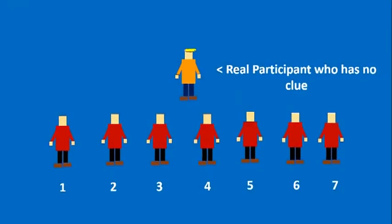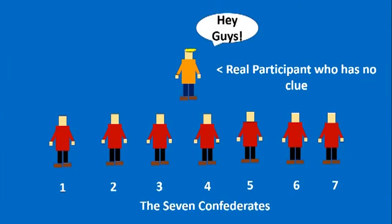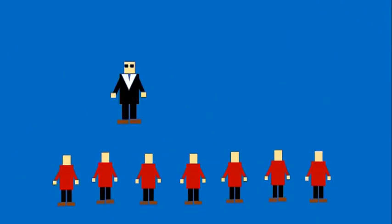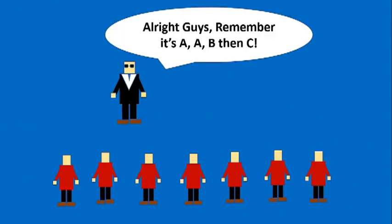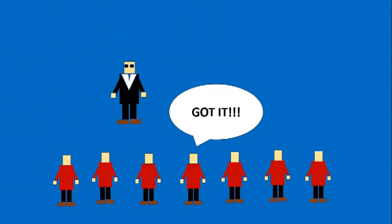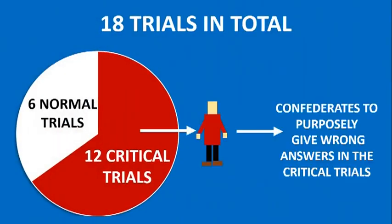Solomon Asch put a participant in the room with seven other people. Unknown to the participant, the seven other people were actually confederates. The confederates had already met with Solomon Asch beforehand and agreed on a pre-selected set of answers. In total, there were 18 trials. Twelve of those 18 trials were known as the critical trials, in which the confederates would give the wrong answer on purpose.